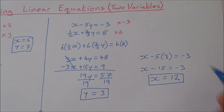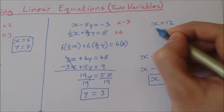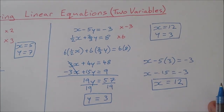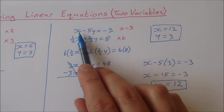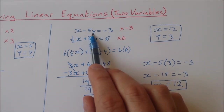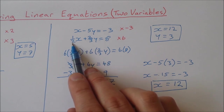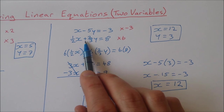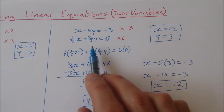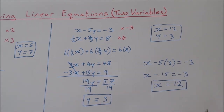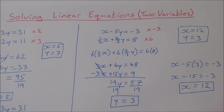So my two values are x equals 12 and y equals 3. To check: 12 minus 5 times 3 is 12 minus 15, which equals minus 3 — that works. And one-half of 12 is 6, plus two-thirds of 3 is 2, giving 8 — that works too. Both solutions check out. Thanks for watching, and if you have any questions please ask in the comments below!